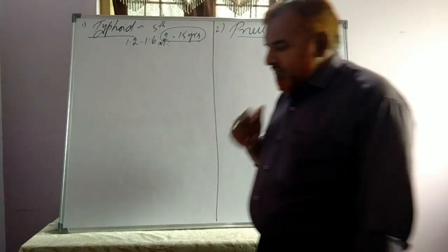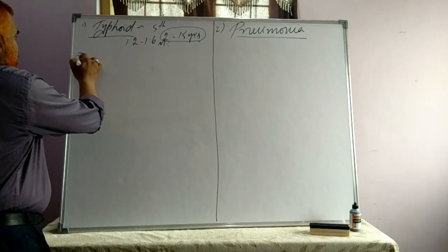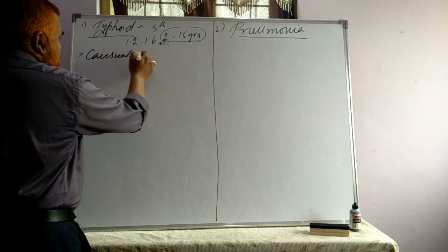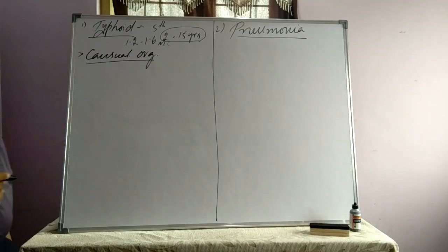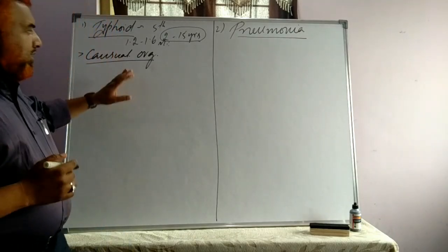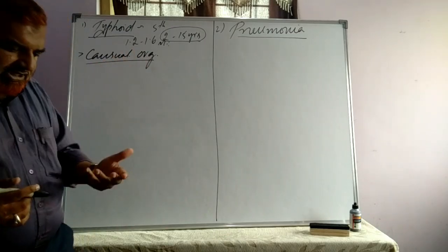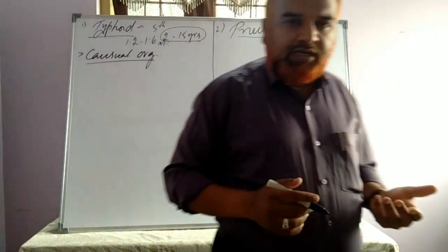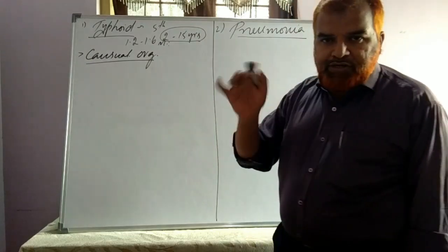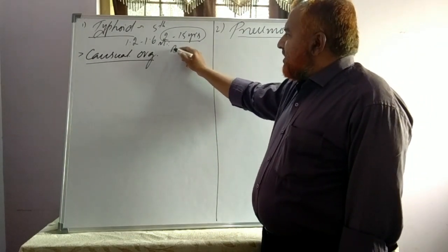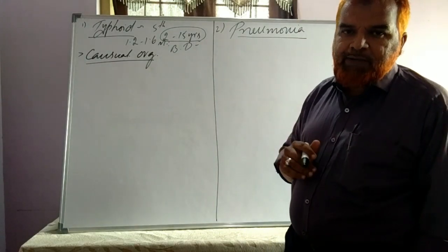Now when we discuss typhoid in detail, the first point is the causal organism — or the disease-causing agent. Typhoid is a bacterial disease, meaning it is caused by a bacterium. It is also an infection of the intestine. The causal organism is Salmonella typhi.